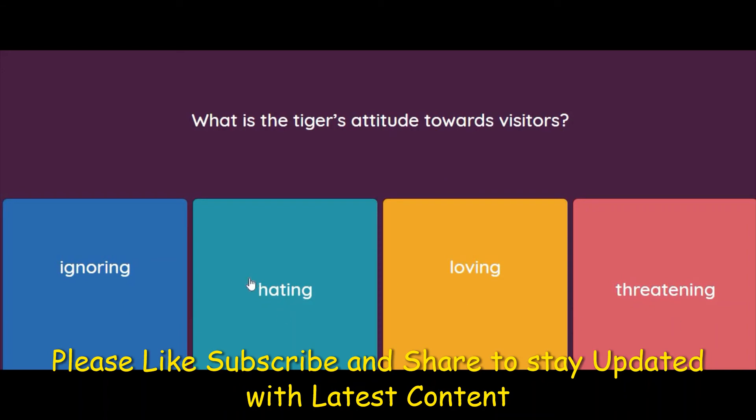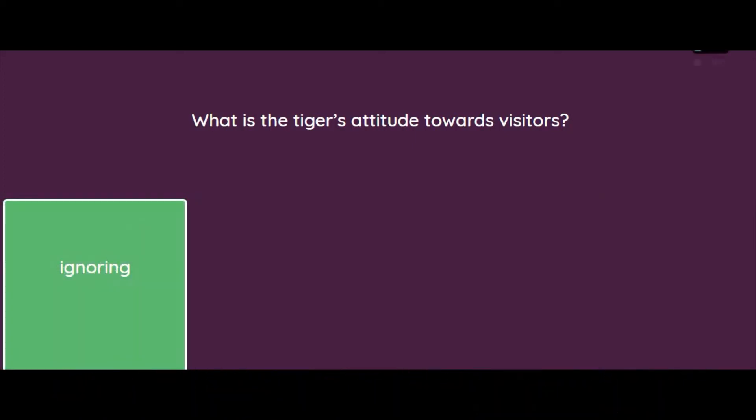What is the tiger's attitude towards visitors — ignoring, hating, loving, or threatening? The attitude of the tiger towards visitors is ignoring, because he knows he can't do anything with them, so he ignores them.